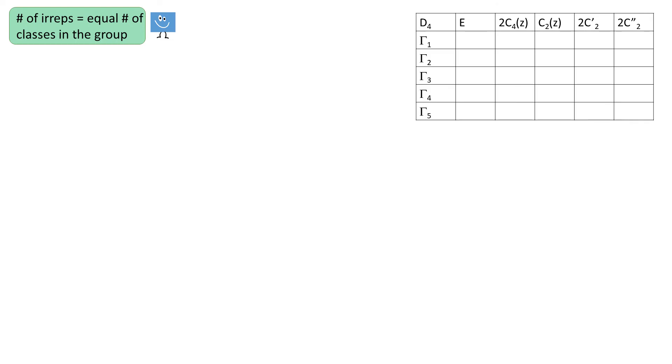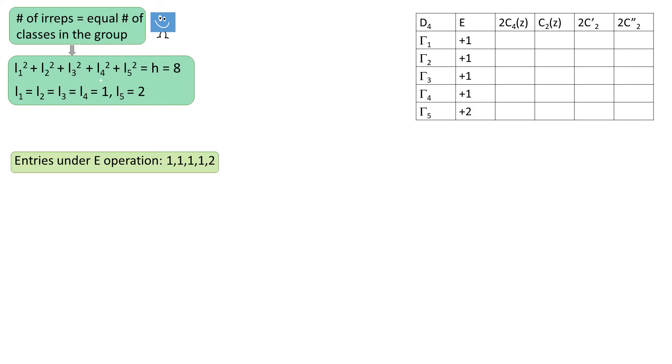Let's do the last example D4. D4 has 5 classes, therefore it has 5 EREPs. The sum of squares of the dimensions of these EREPs equals to the number of operations, that is 8 in this case. The only set of numbers that satisfies this equation is 1, 1, 1, 1 and 2. Now, we can fill in the entries under E operation.